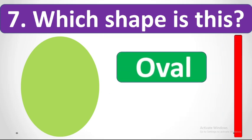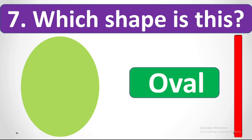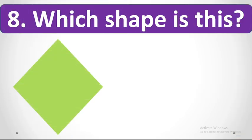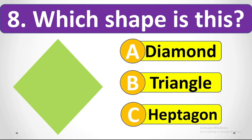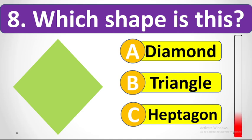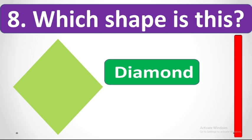It's a semicircle. Which shape is this? Your options are diamond, triangle, or heptagon. Your time starts now. It's a semicircle.